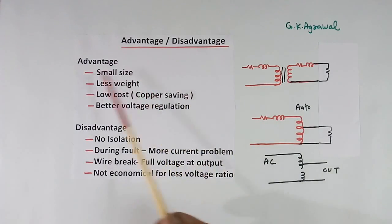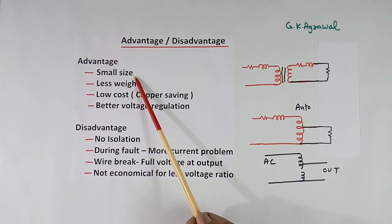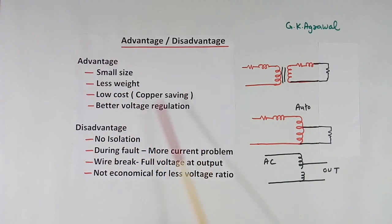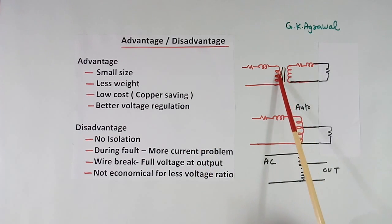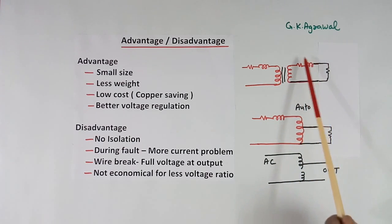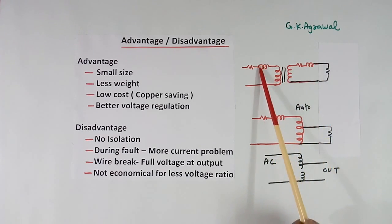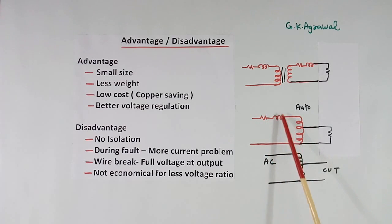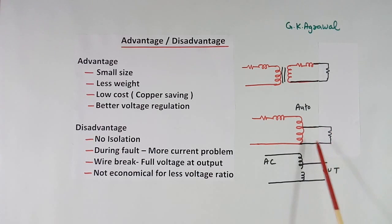Advantages: small size, because there is only 1 winding — so size, weight, and cost are less, and there is copper saving. Also, better voltage regulation. In a normal transformer, each of the 2 windings has its own impedance, so when load current flows there is a voltage drop across both. In an auto transformer there is only 1 winding with only 1 impedance, so there is less drop and better voltage regulation even when load current changes.